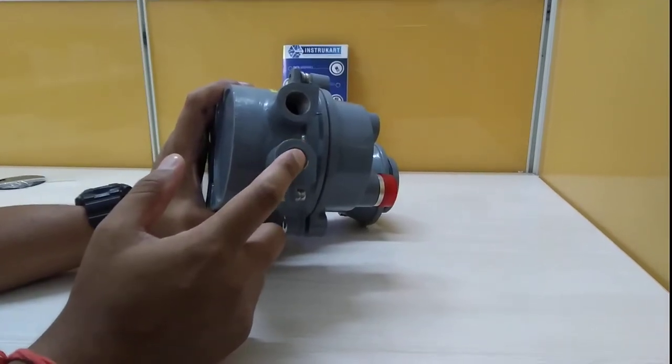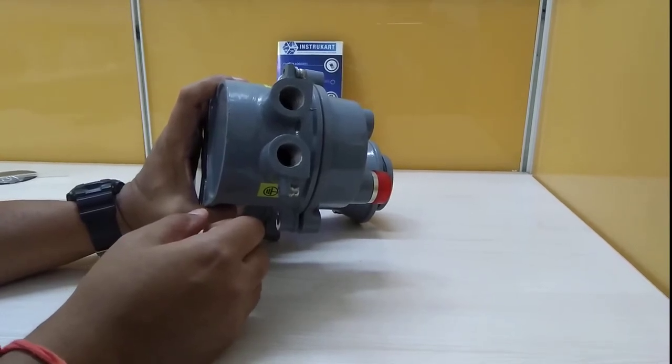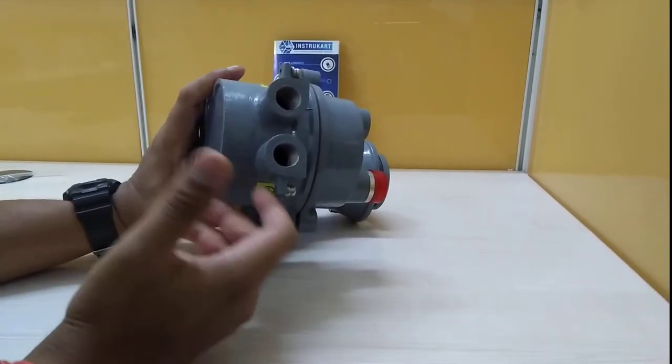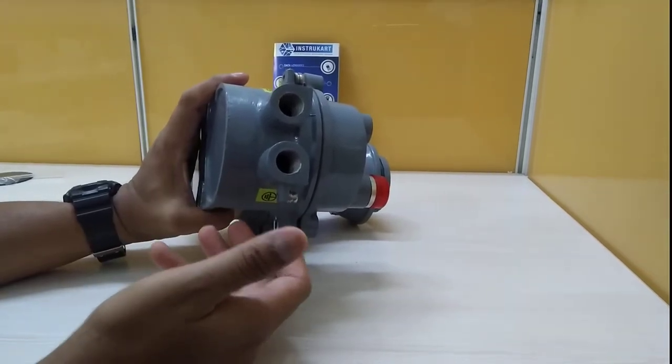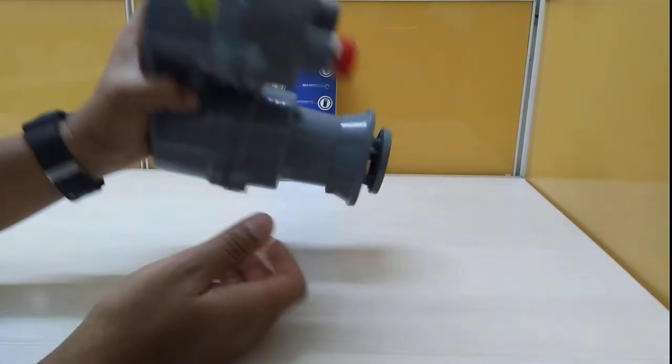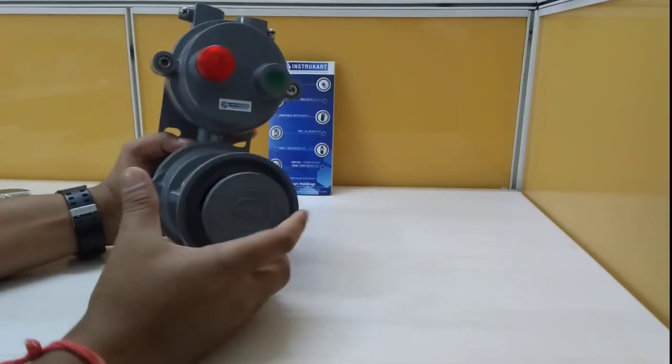The armored cables are used in these kinds of zones. The zones could be pharmaceutical plants, chemical plants, or any other plants wherever we use this kind of flameproof hooter.